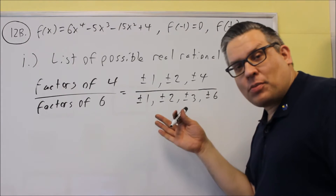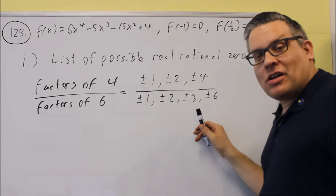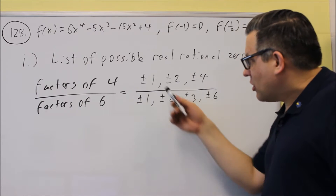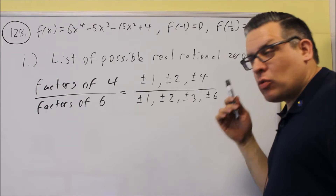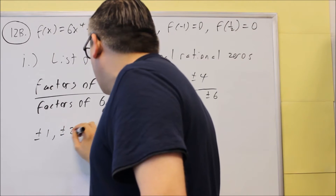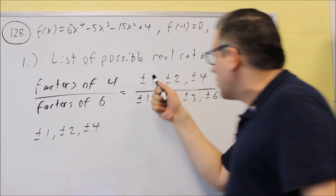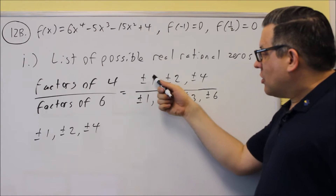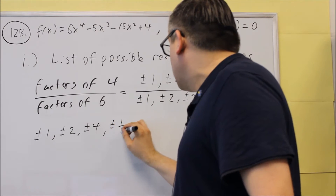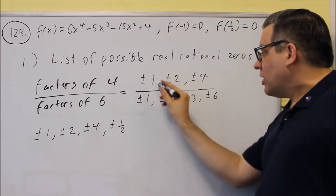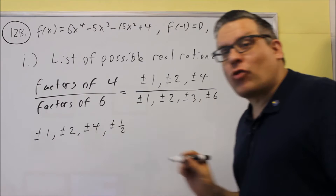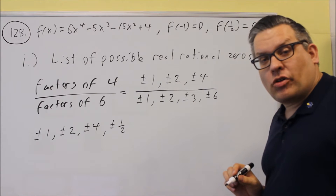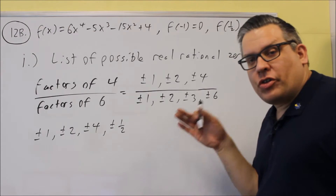As mentioned before, you don't want to leave it in that fraction form. You want to divide all of them out and write it as one big list. Take all numbers on top divided by one: plus or minus one, plus or minus two, plus or minus four. Now divide by two: plus or minus one half. Two over two is one — already on the list. Four over two is two — already on the list, so no repeats needed.